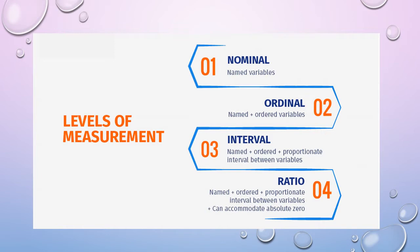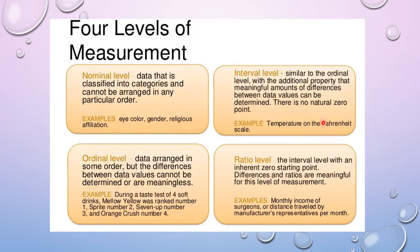Nominal data is classified into categories and cannot be arranged in any particular order. There is no order in the nominal stage; they are used only for nomination. Even though there may be some letters or numerical values, those are just for nomination. As examples we can use eye color, gender, and religious affiliations.